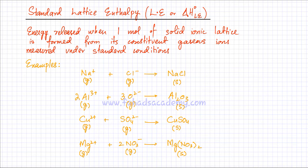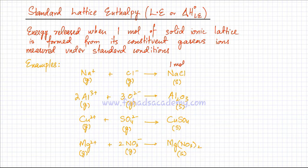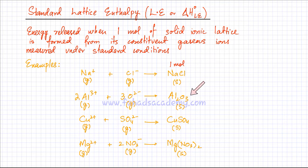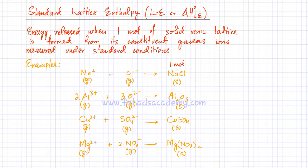The solid ionic lattice should always be one mole. The moles of the gaseous ions can be different — it depends on the formula of the solid ionic lattice. For example, for Al₂O₃ there were two aluminum ions and three oxygen ions. So the moles of the gaseous ions can vary, but the moles of the solid ionic lattice must always be one mole.